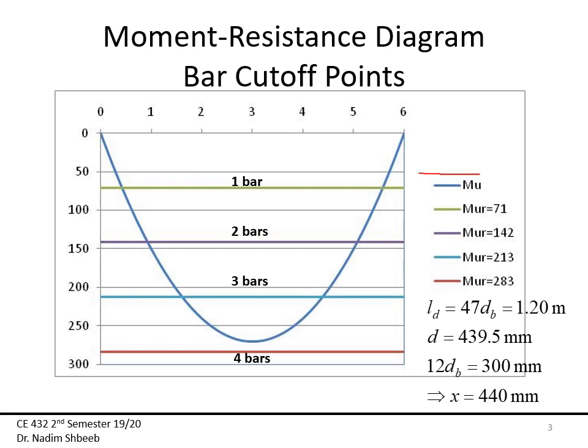The next step is to draw the moment diagram, which is wL²/8 for this simply supported beam. On top of that, I lay the moment resistance values: 283 kN·m for four bars, then the values for three bars, two bars, and one bar — just plotting these resistance levels onto the moment diagram.